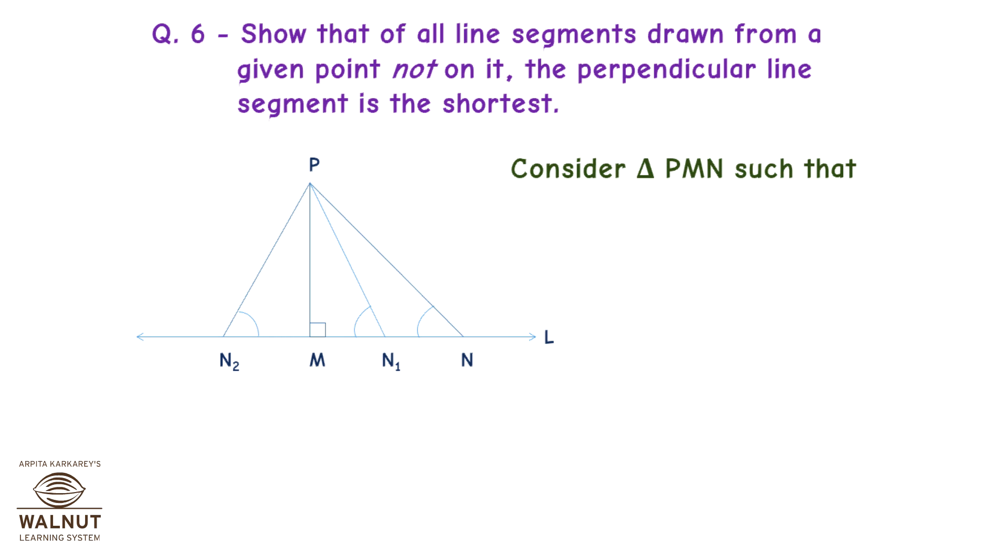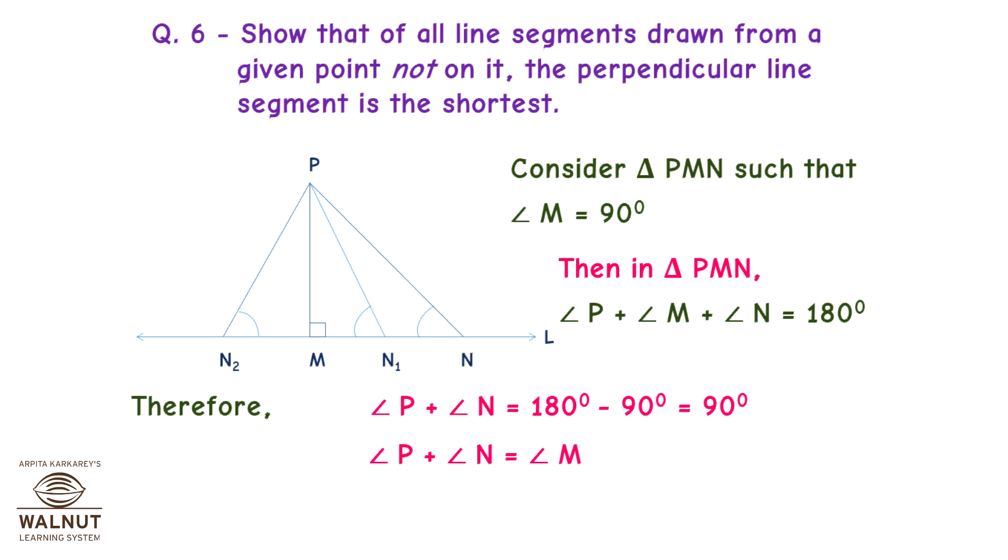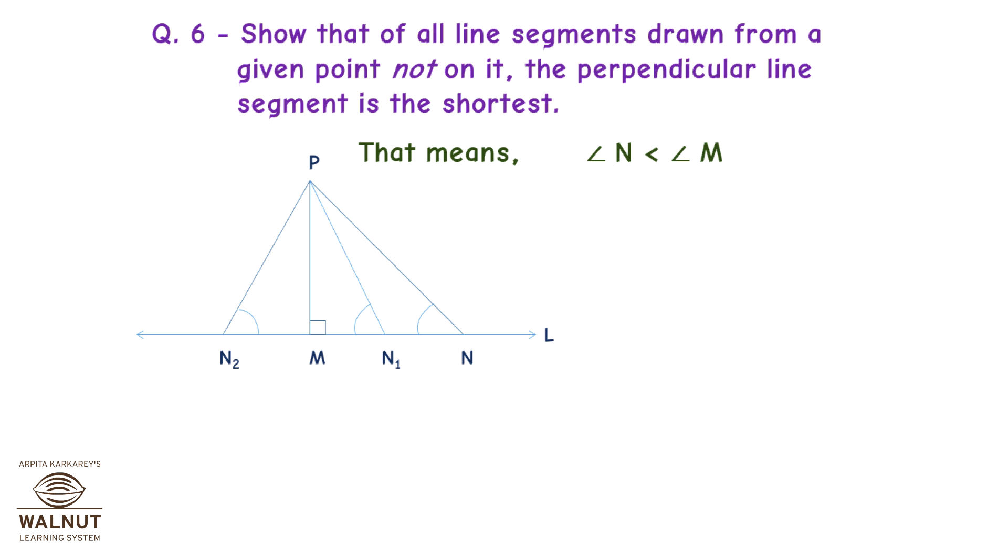Consider triangle PMN such that angle M is equal to 90 degrees. Then, in triangle PMN, angle P plus angle M plus angle N is equal to 180 degrees, minus 90 degrees, which is equal to 90 degrees. Therefore, angle P plus angle N is equal to angle M as angle M is equal to 90 degrees. That means, angle N is less than angle M. Therefore, PM is less than PN.